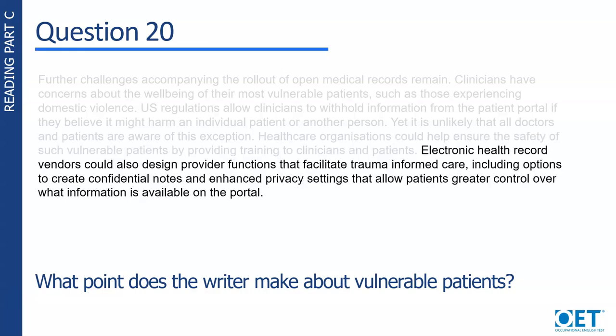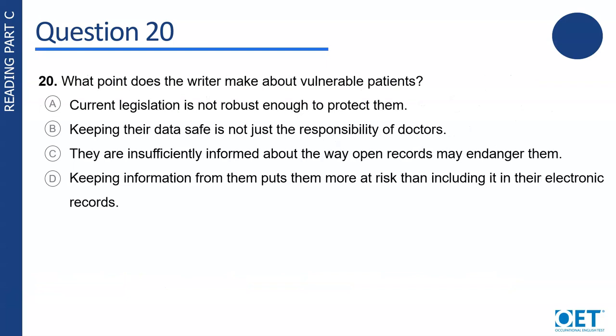Sentence 5 suggests healthcare organisations could help ensure the safety of vulnerable patients through training. And sentence 6 suggests health record vendors could design functions for enhanced privacy settings to give patients greater control over the information available. Take another 10 seconds to read the four answer options again. Can you now pick one that is a good match for what you've just read?